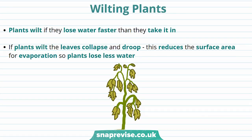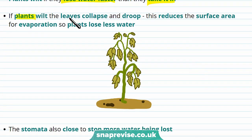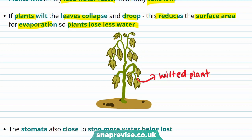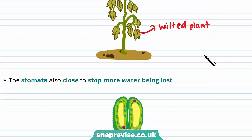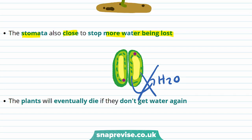What happens if the plant loses too much water? Plants wilt if they lose water faster than they take it in. If plants wilt, their leaves collapse and droop, which reduces the surface area for evaporation so the plant loses less water. The plant also adapts to low water availability by closing the stomata, stopping more water from being lost, as water can't diffuse out of the leaf. However, losing too much water is a problem as plants will eventually die if they don't get water again.